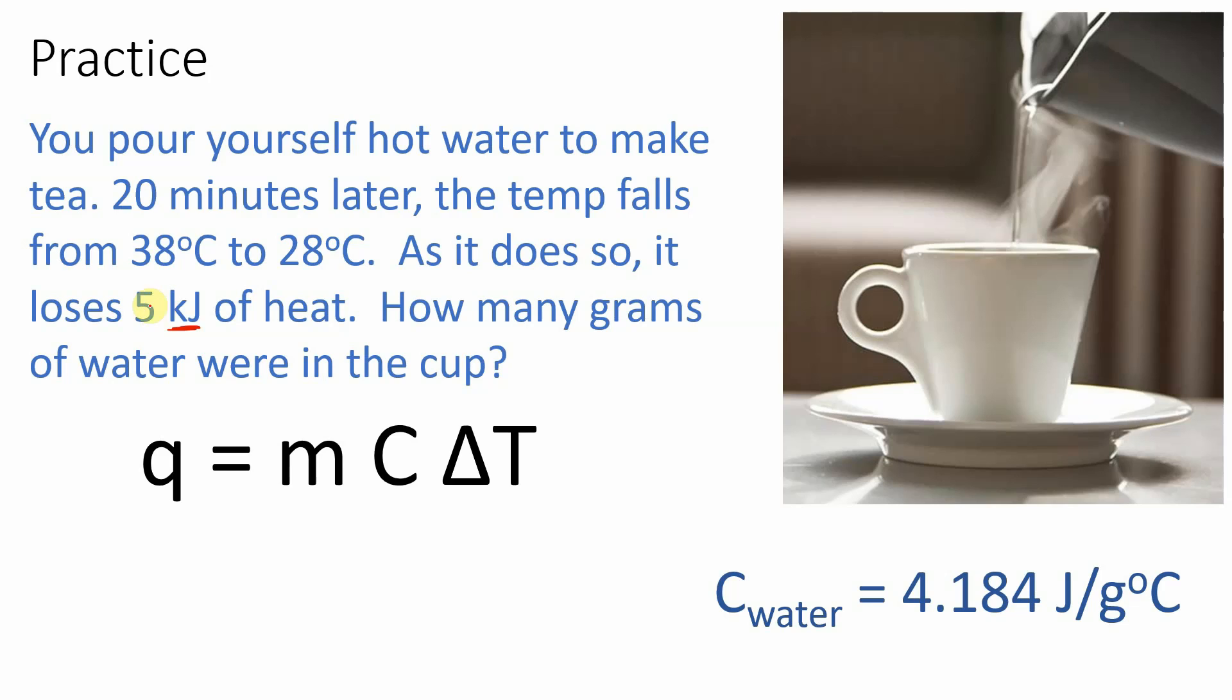We need to pay attention to the heat. Very often they require us to put the sign on it. Well it is losing 5 kilojoules of heat as it cools down. In other words the cup is hot, the air is colder, the cup is cooling down. So the heat is going out. Q is going to be negative. So we're going to say negative 5,000 joules of heat. So that's the first trick.